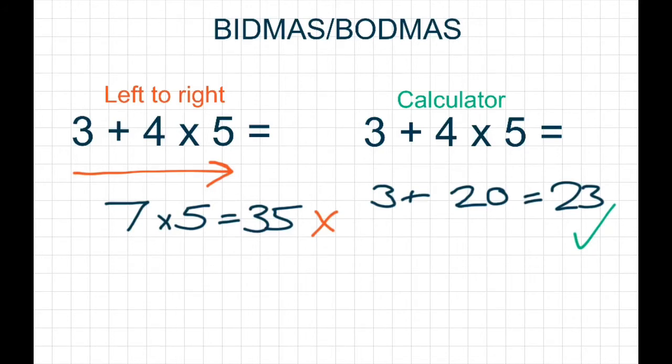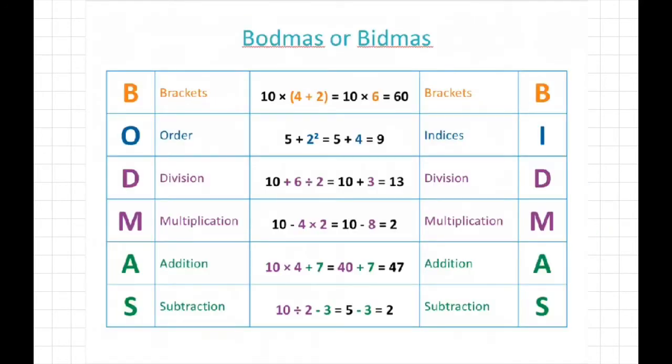So what is the calculator doing that we're not doing when we're answering a question from left to right? The calculator is using the rules of BIDMAS or BODMAS. Some people call it BIDMAS, some people call it BODMAS, and the only difference is the second letter. Order and indices stand for the same sort of thing.